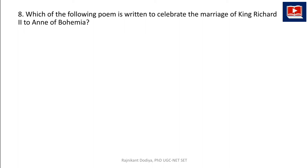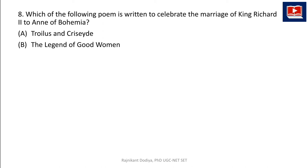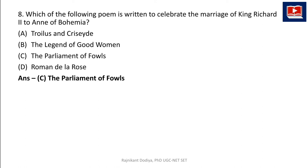The next question: which of the following poems was written to celebrate the marriage of King Richard II to Anne of Bohemia? Options: Troilus and Criseyde, The Legend of Good Women, The Parliament of Fowls, or Roman de la Rose. The correct answer is C: The Parliament of Fowls, written by Chaucer to celebrate that marriage.